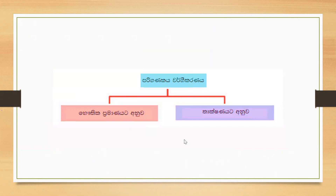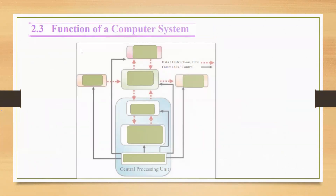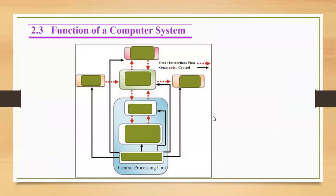We can move to the next point. Now this is very important — time to ask some questions. I think you can remember this structure. Here you can see solid lines denote commands — this part gives some commands to other parts. And you can see the dotted lines — dotted lines denote data or instruction flow lines. Normally we can give some data and those are flowing this way and going out.